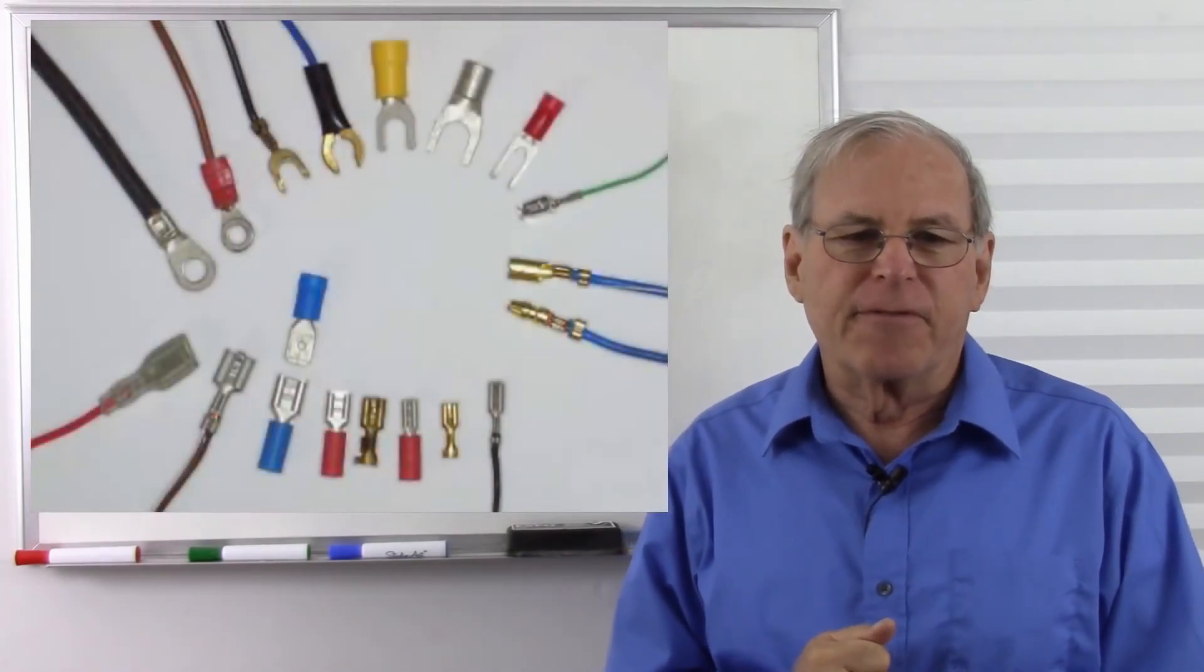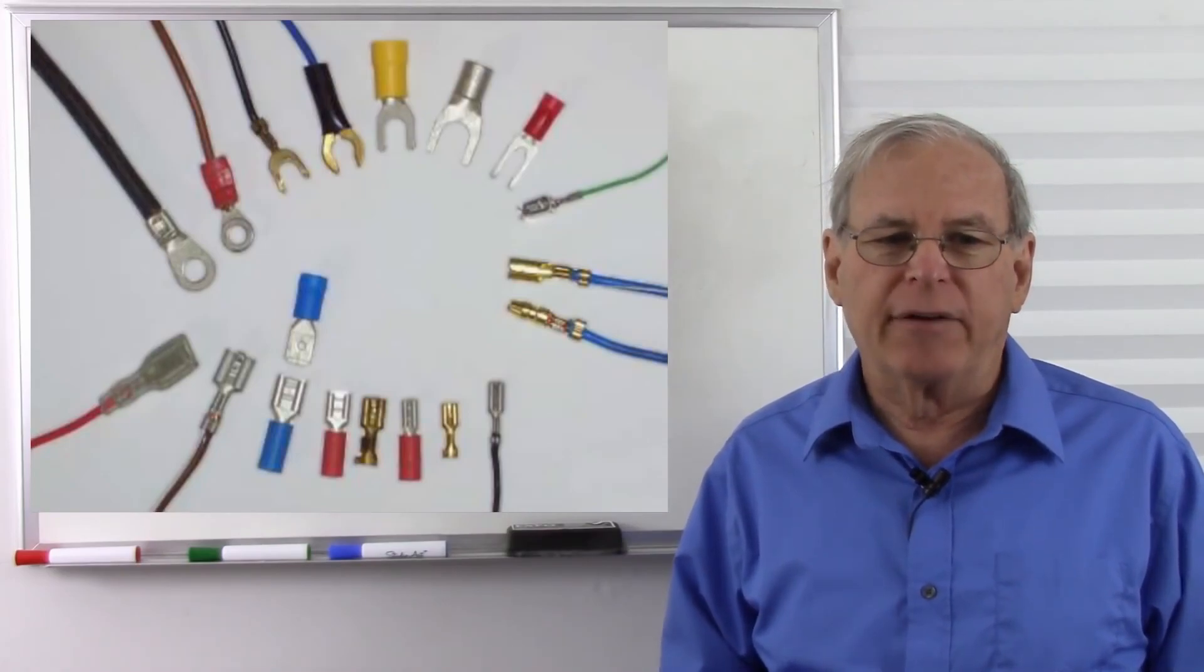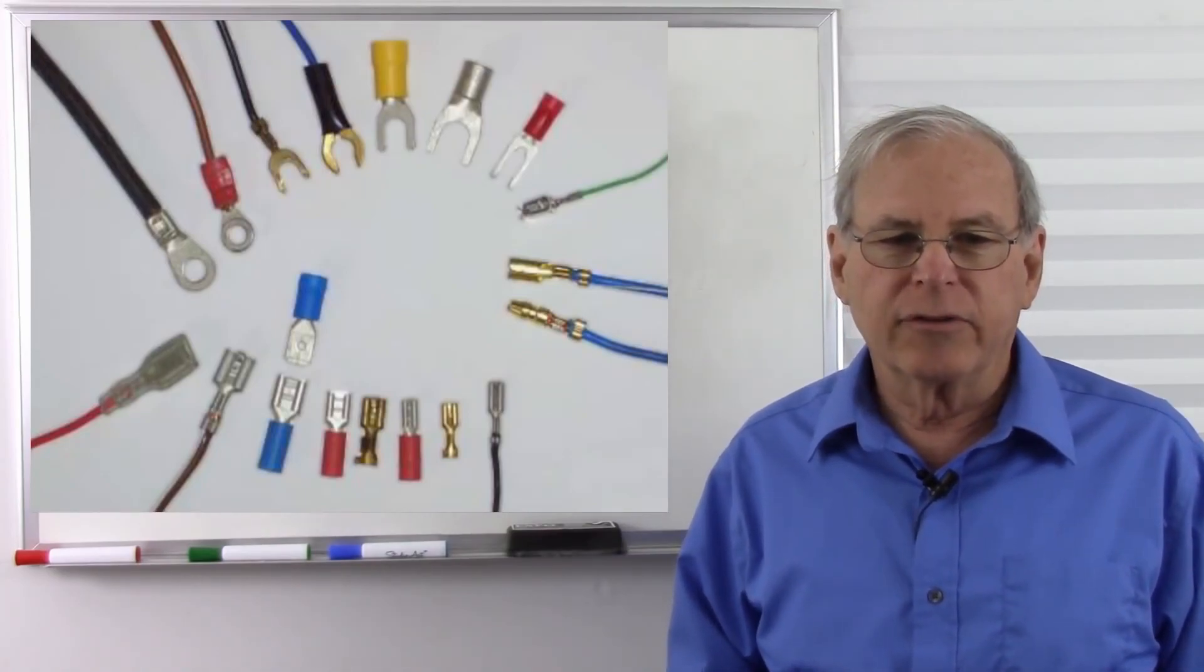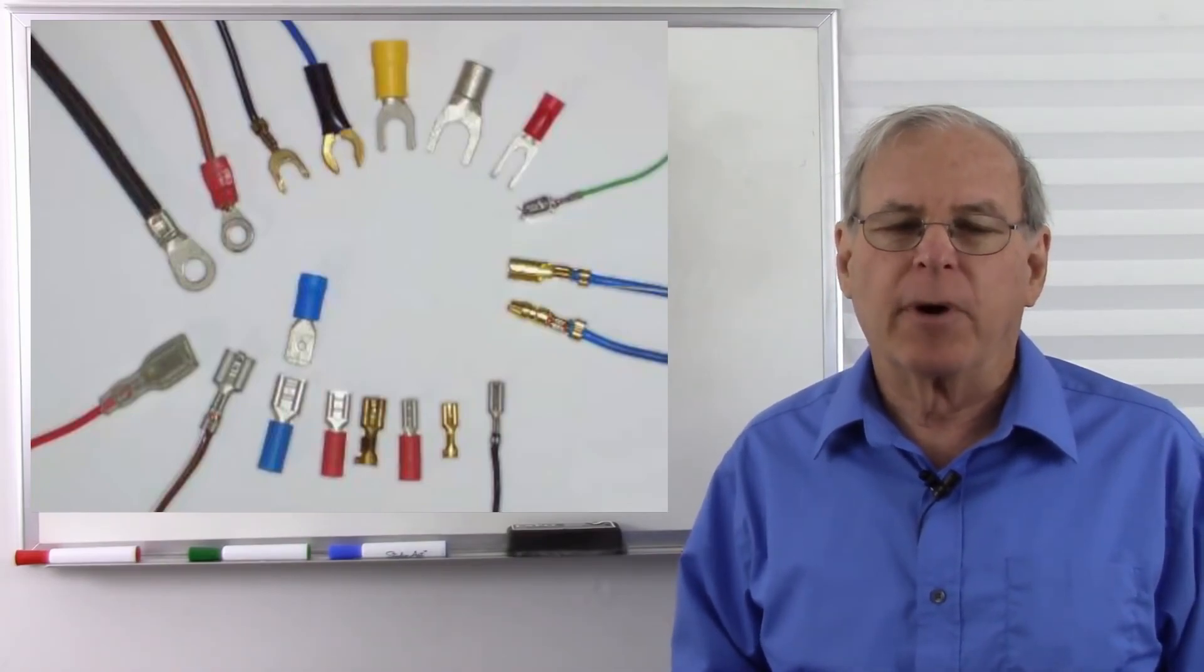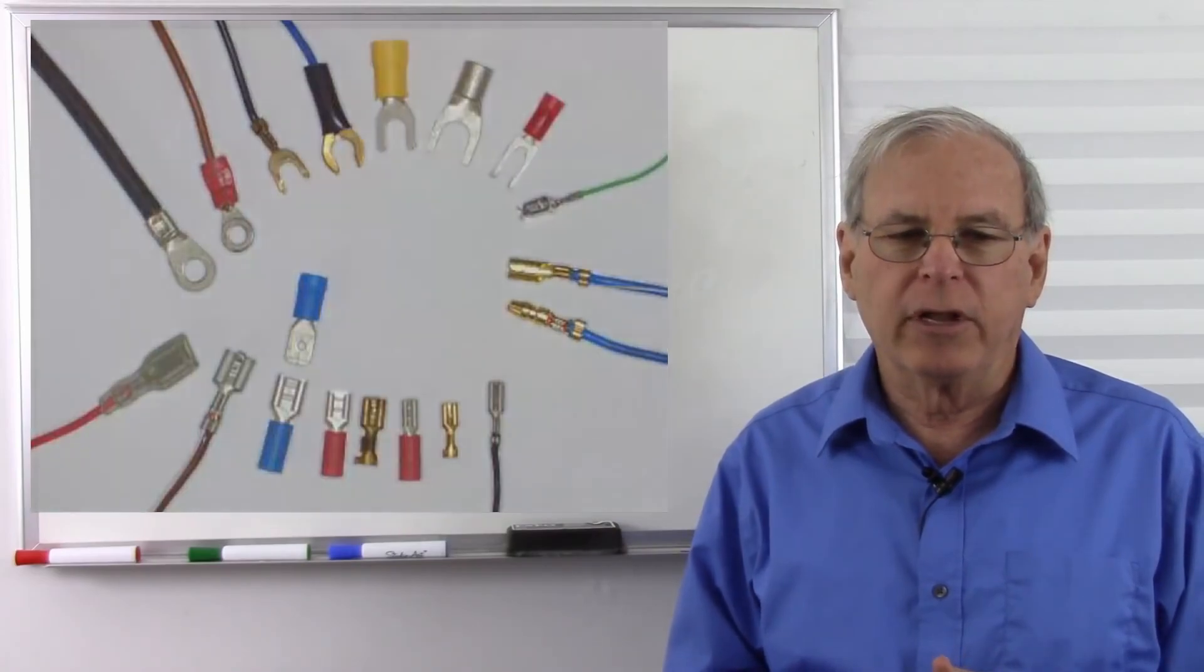Here's a variety of different types of lugs. We have spade lugs, ring lugs, and fork lugs that are used for various types of connectors. These are usually crimp on, used wherever they are appropriate to use.